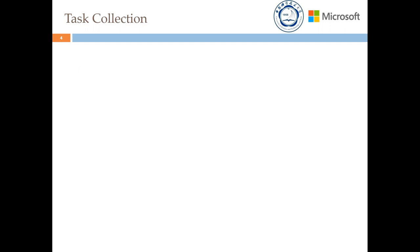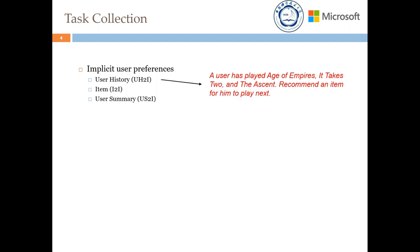The first group of tasks consolidates the matching from implicit user preferences to relevant items. For example, the query about user history is represented by the behavior history of a user.